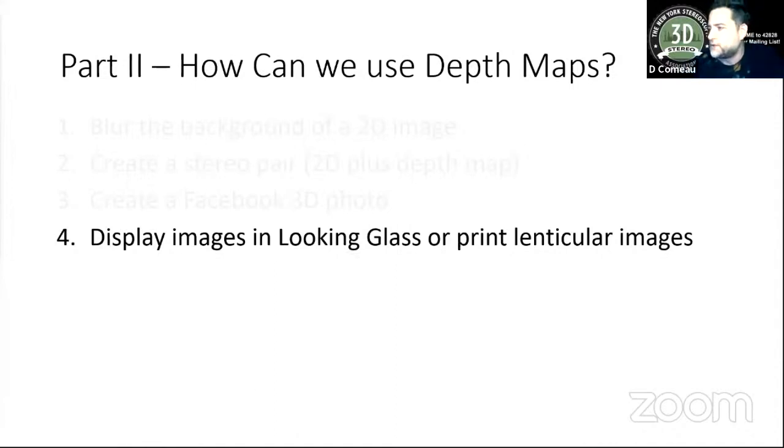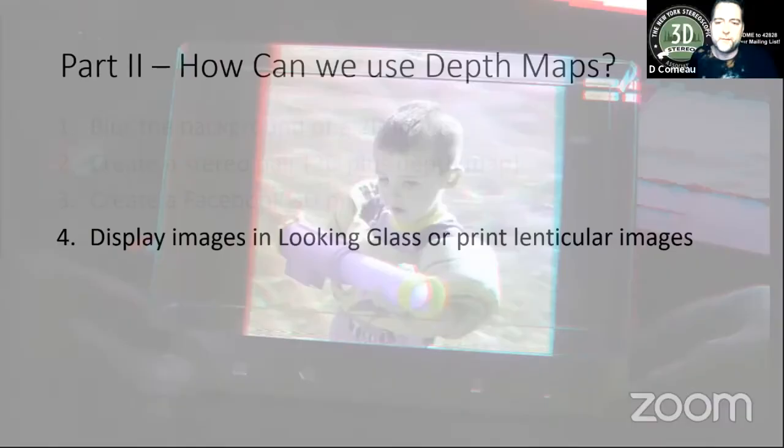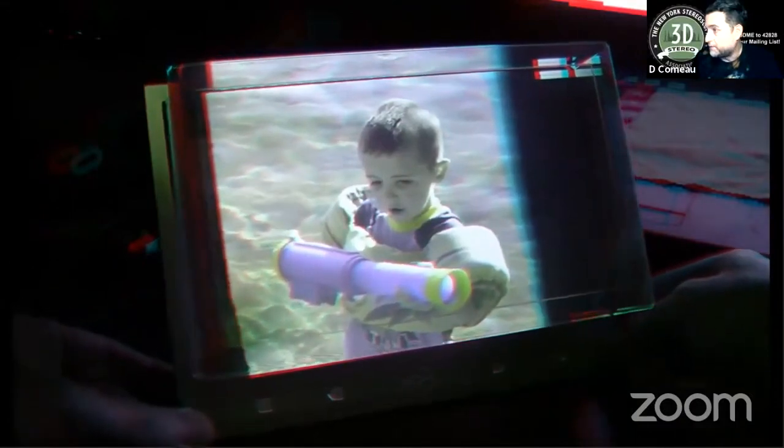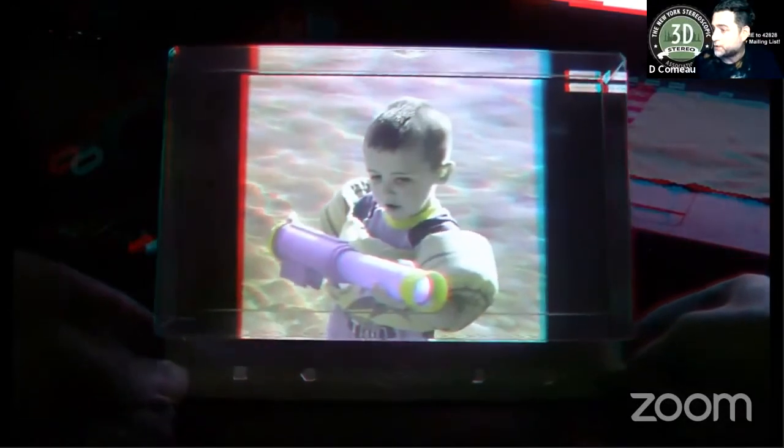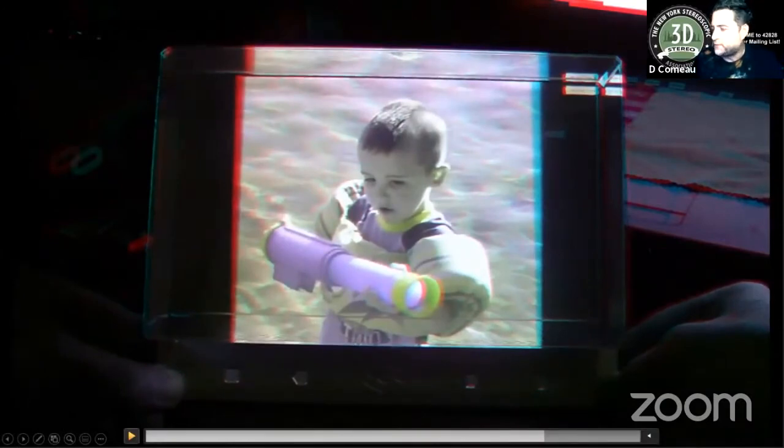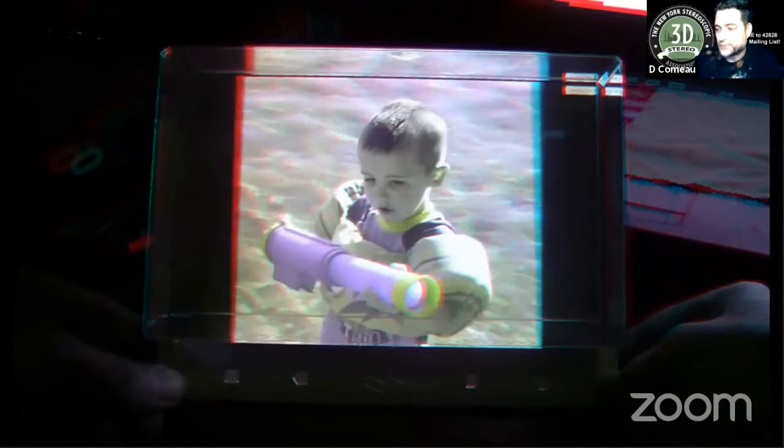Another thing we can do with depth maps is we can display images in the looking glass or print lenticular images. So we've talked about the looking glass before in NYSA Presents. And a number of us have ordered the looking glass portrait. I'm going to show you an example on the older portrait display. And we can use Stereo Photo Maker or Looking Glass Factory software. Or Misuji Suto has also made a web viewer, which helped us view depth maps and images in the looking glass. So here's a looking glass and I'm moving it, it looks pretty good up near his head. There is a little bit of speckling because it doesn't quite know what to do with the water back there.